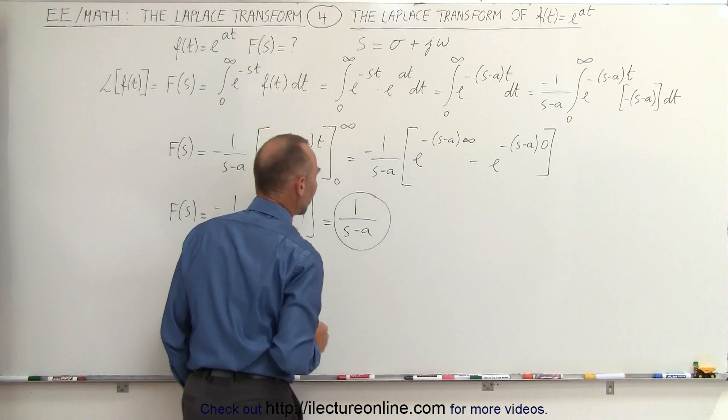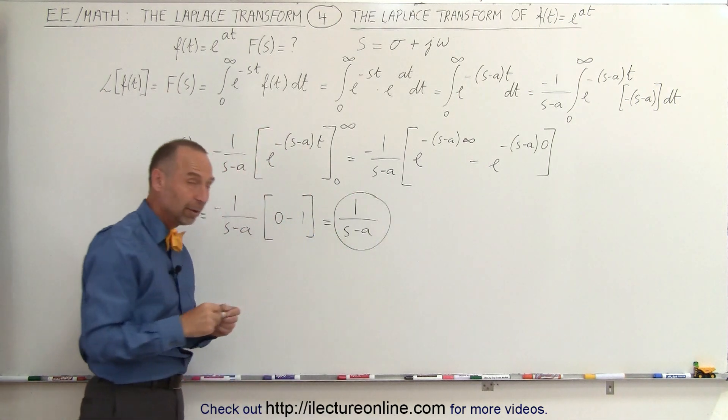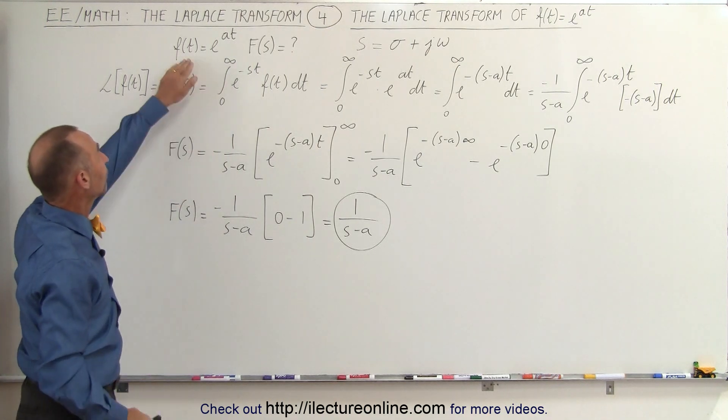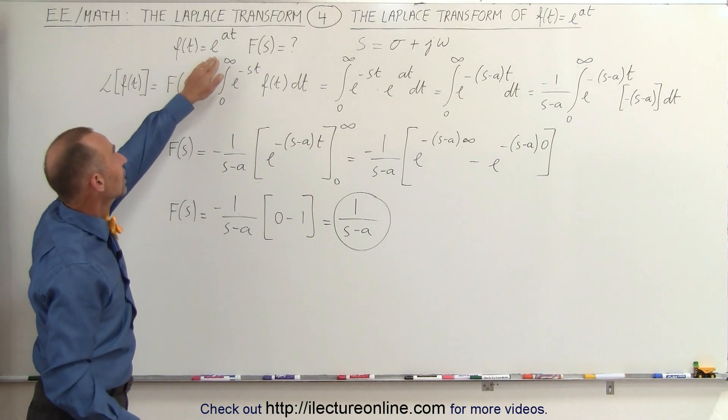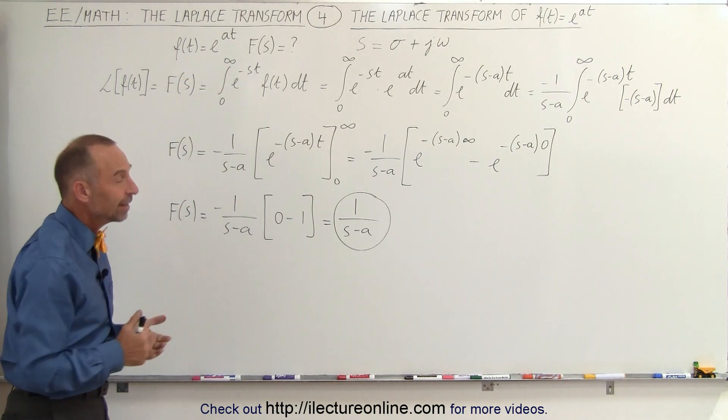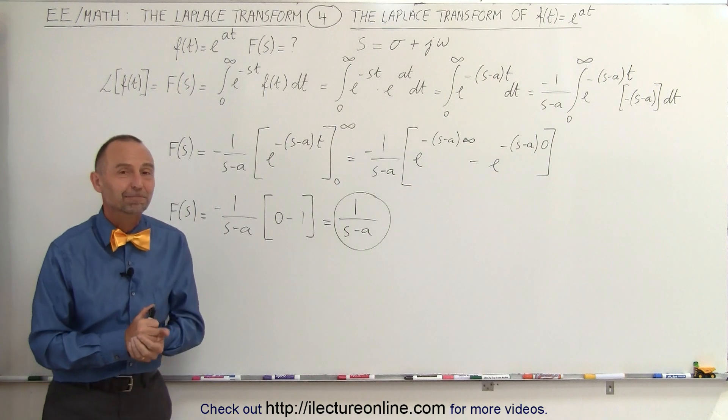This becomes then 1 over s minus a. And this is the Laplace transform of our original function f of t equals e to the at. And that's how that's done.